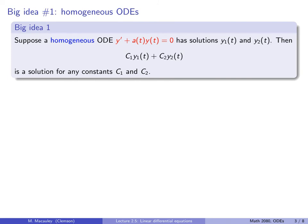Big idea number one: suppose a homogeneous differential equation has two solutions, y1 and y2. Then any linear combination — c1·y1 plus c2·y2 — is also a solution. If you're an engineer or physicist, you might think of this as superposition. So if y1 and y2 are solutions, then 6·y1 plus 18·y2 is also a solution.